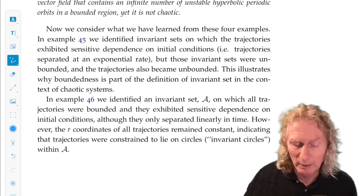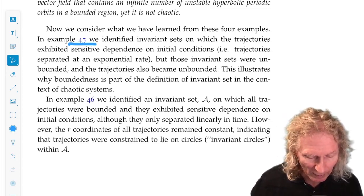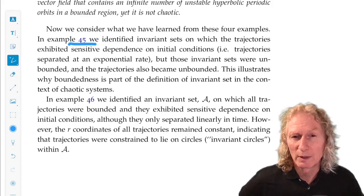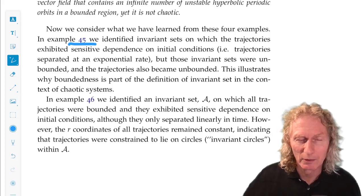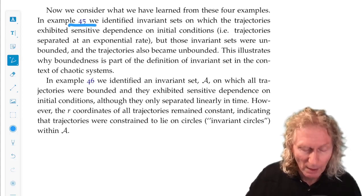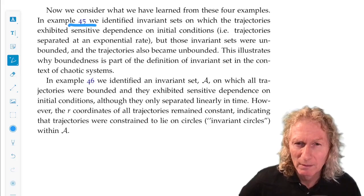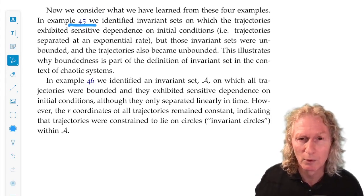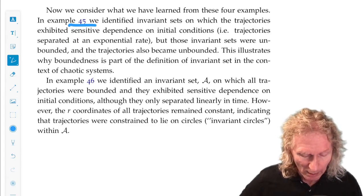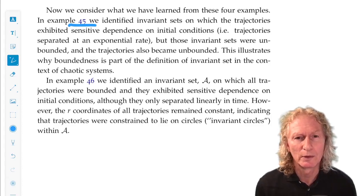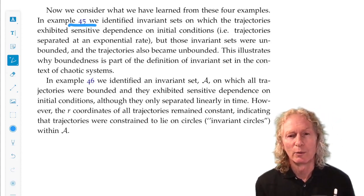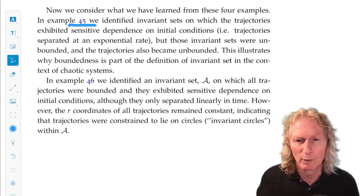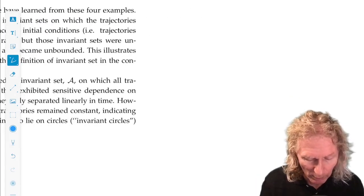So, from these four examples, what have we learned? Example 45, standard saddle, we've identified invariant sets on which we have sensitive dependence on initial conditions. They're all unbounded except for the origin. We didn't have sensitive dependence on initial conditions on the stable manifold of the origin. But we're going to want boundedness to be part of our definition of chaos, chaotic invariant sets. That throws out linear systems on the plane. In 46, we had a nice little example on the cylinder and we had sensitive dependence on initial conditions, points moved apart linearly in time, but they came back together. But they all stayed at the same radius. Moved apart, came back together, moved apart, came back together. We wouldn't call that chaotic.